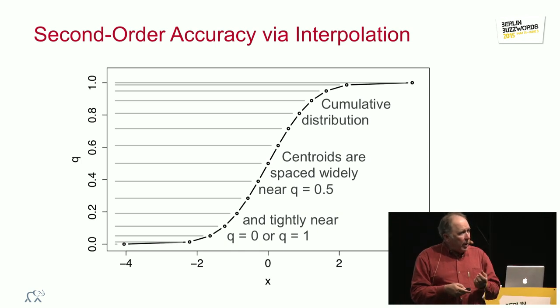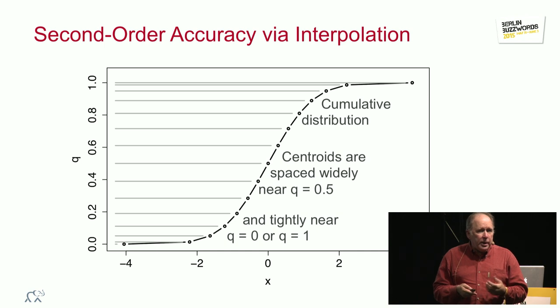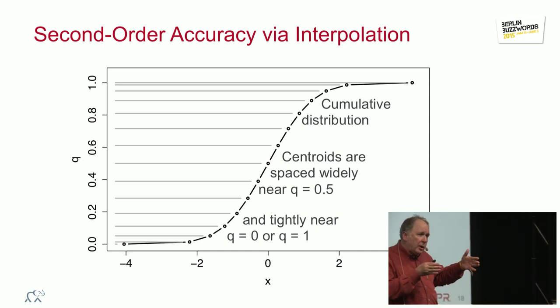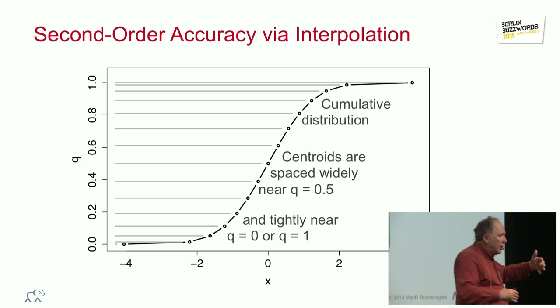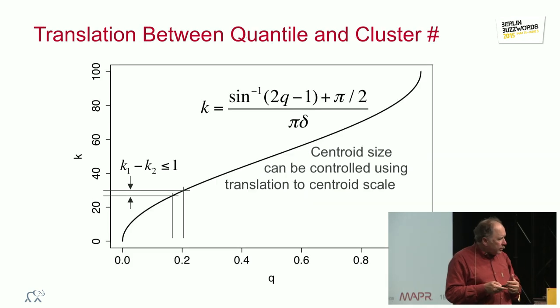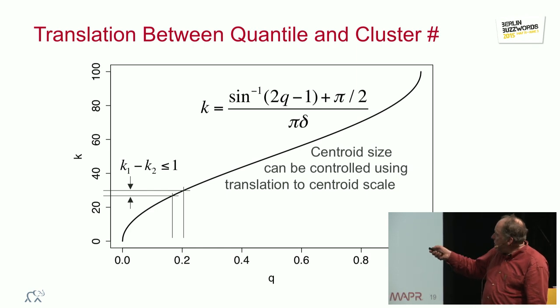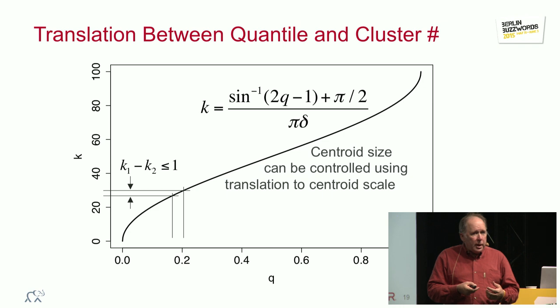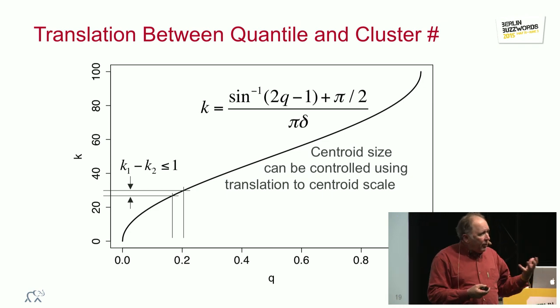That gives us a very important property that the size of the T-digest is bounded. For the same accuracy, no matter how much data you give it, it has a finite amount of size. And we do that by using, I'm going to go quickly through these parts, and then give some more examples. These are going to be for reference more.